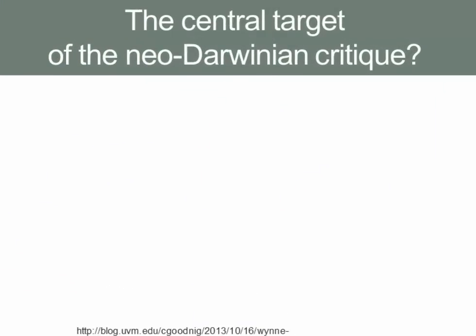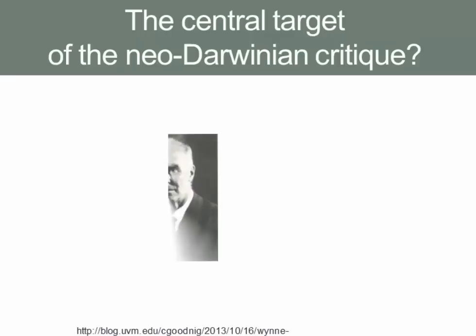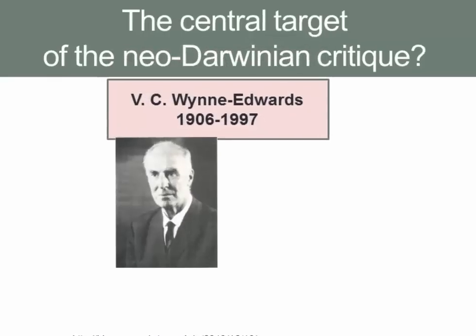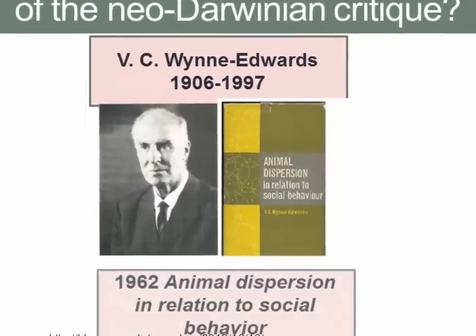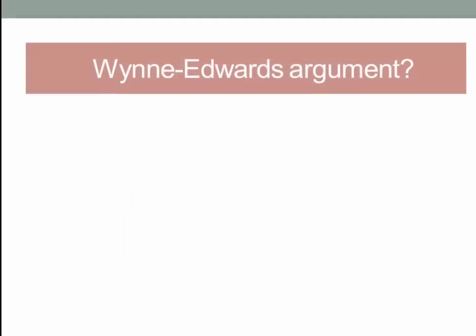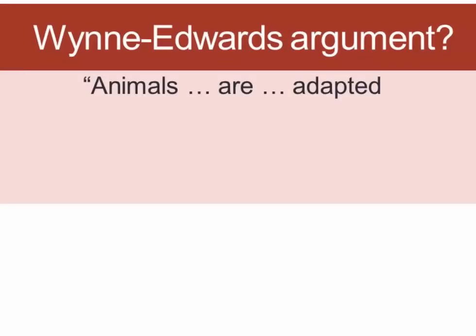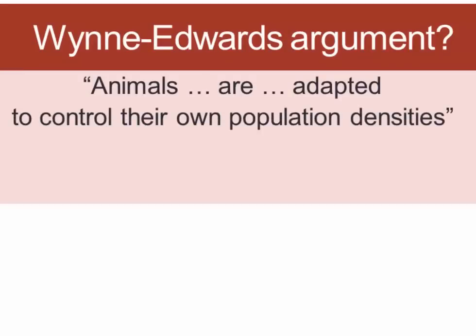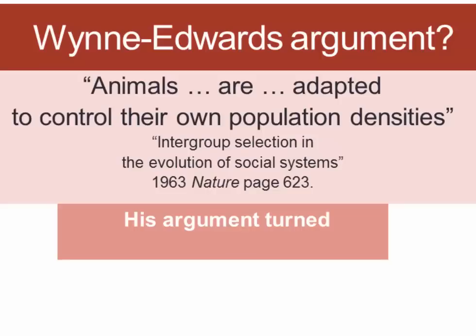The central target of the criticisms of George Williams and others was the work of biologist Vero Copner Wynne-Edwards, and a massive book he published in 1962 titled 'Animal Dispersion in Relation to Social Behavior.' At the heart of Wynne-Edwards' work was the argument that different adaptations had evolved in various species of birds and mammals that allowed them to control their population based on responses to increasing density. To quote Wynne-Edwards: 'Animals are adapted to control their own population densities.' This argument turned on what he called intergroup selection.